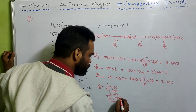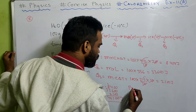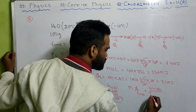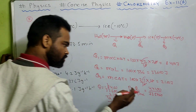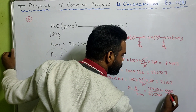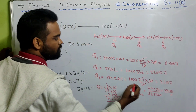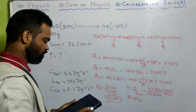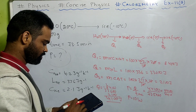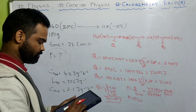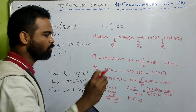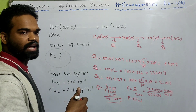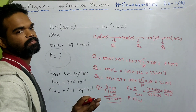Total energy is Q1 plus Q2 plus Q3 equals 8400 plus 33600 plus 2100 equals 44100 joule. Power equals Q by time. Q is 44100 joule, time is 73.5 minutes equals 73.5 times 60 seconds equals 4410 seconds. So power equals 44100 divided by 4410 equals 10 watt. The average rate of heat extraction is 10 watt. Correct.